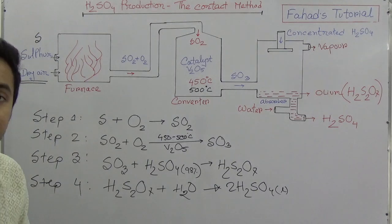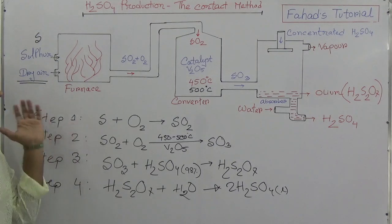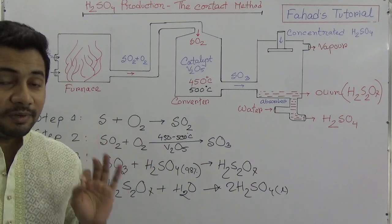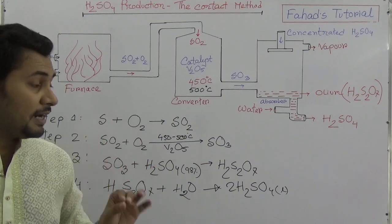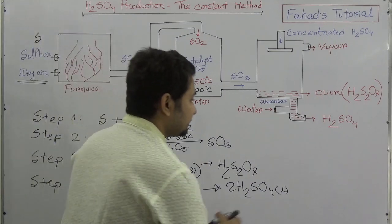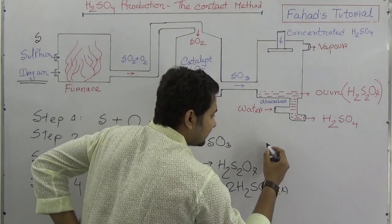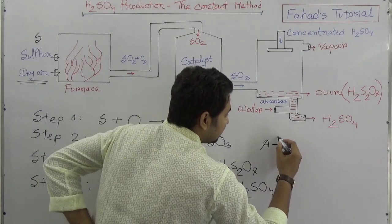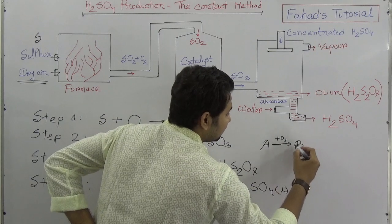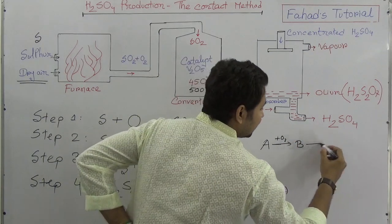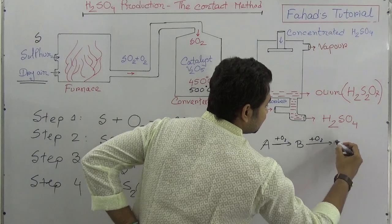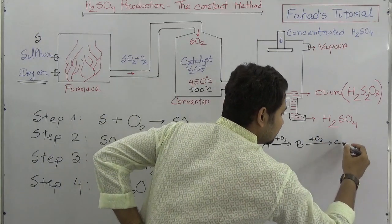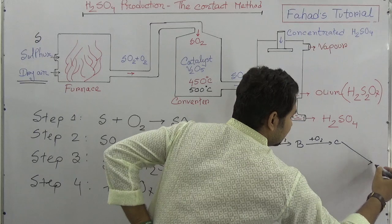These are the steps followed in the contact method, and this is very important. In your question paper you might have a question like: A is added with oxygen producing B, then B is again added with oxygen producing C, then C goes on to produce D and then E.